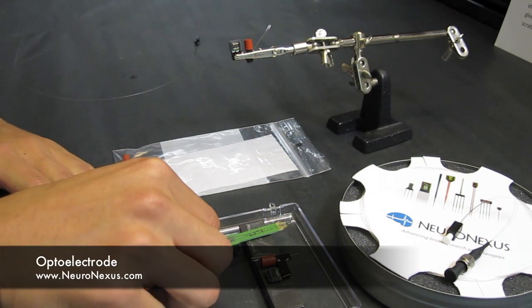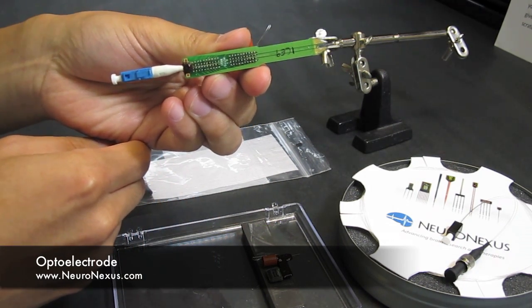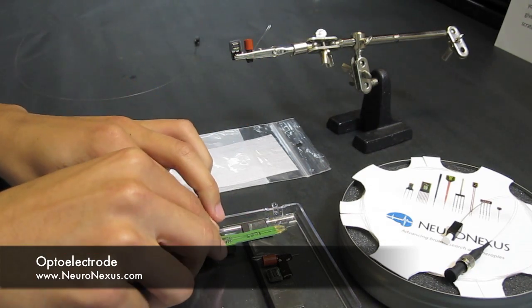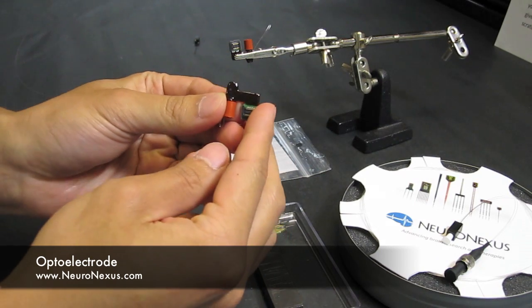Here you can see an example of an acute optoelectrode. This particular one has a 54 channel polythrode. We also have our new chronic optoelectrode.